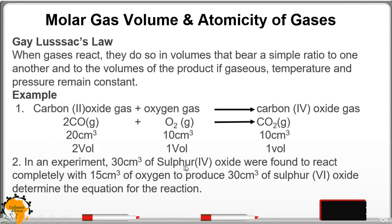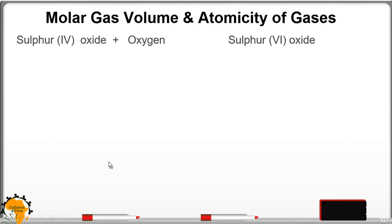In an experiment, 30 centimeter cube of sulfur dioxide were found to react completely with 15 centimeter cubed of oxygen to produce 30 centimeters cubed of sulfur trioxide. Determine the equation of the reaction. Right there, the chemical equation, then write the volumes underneath. 30, 15, 30.